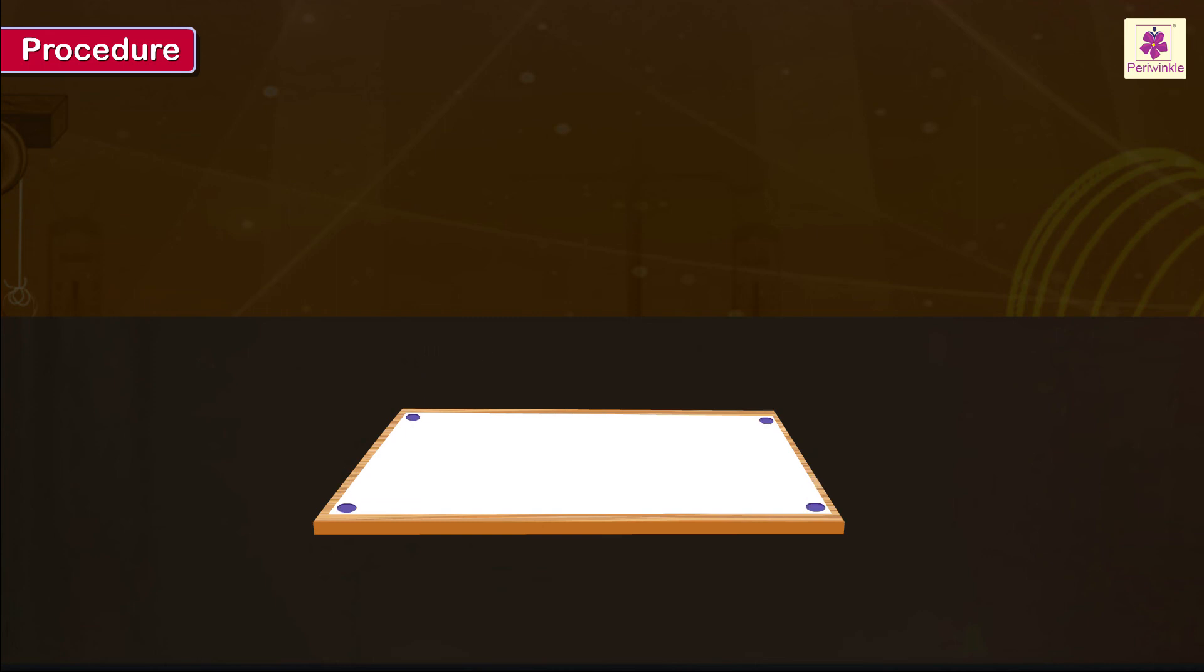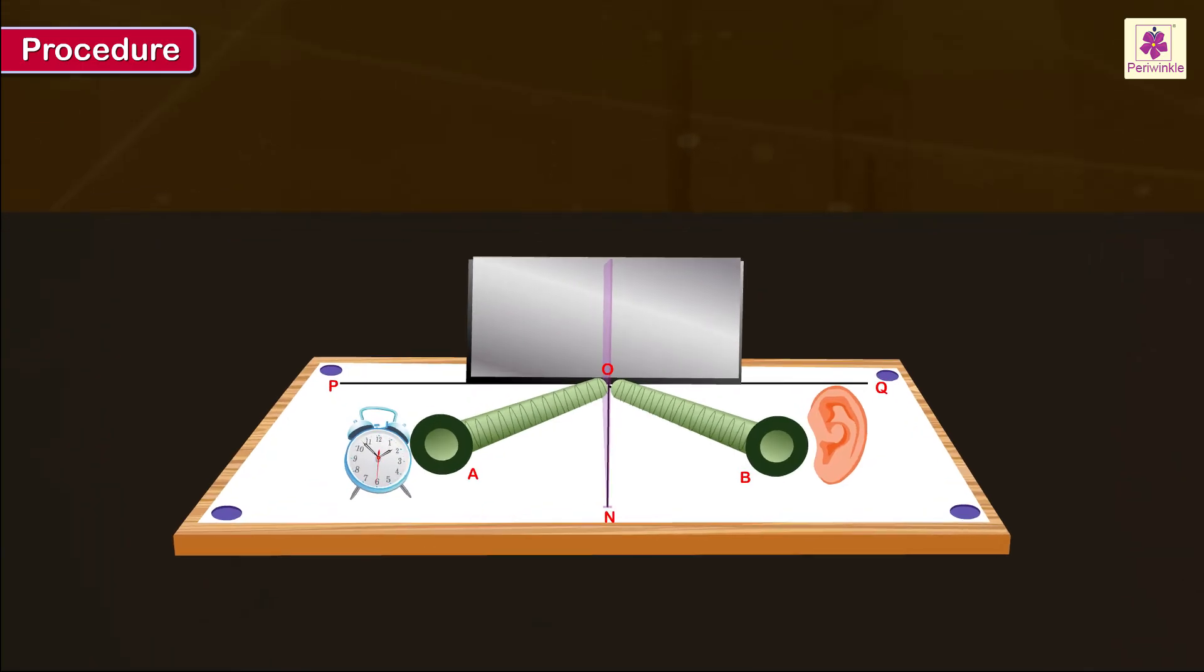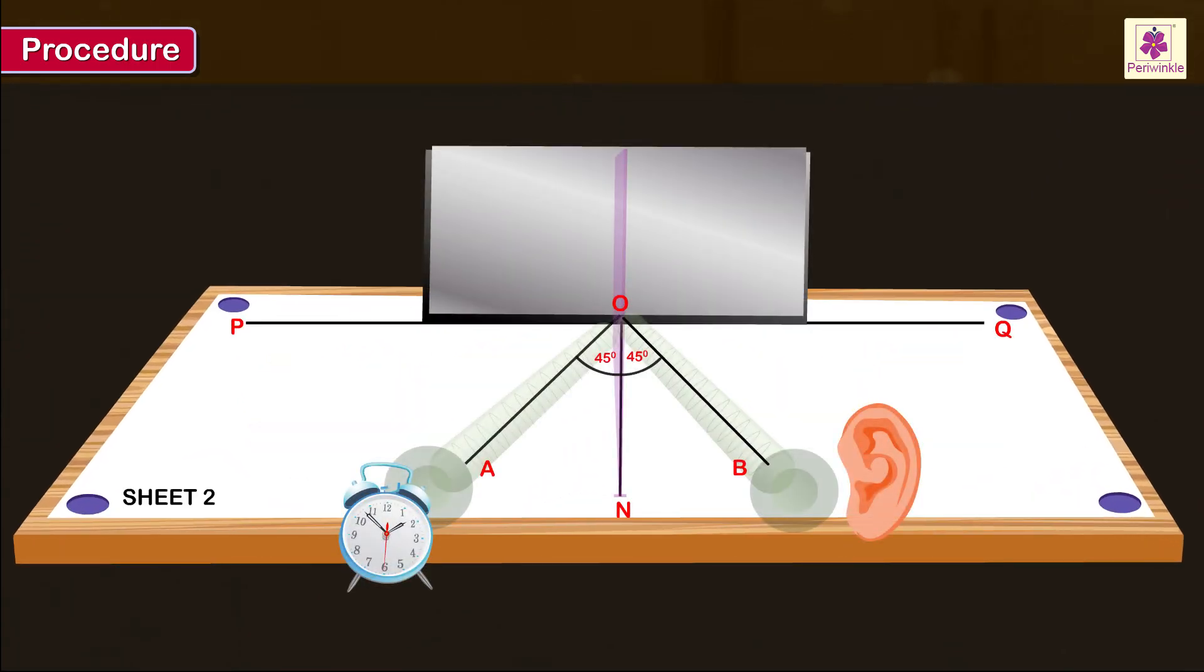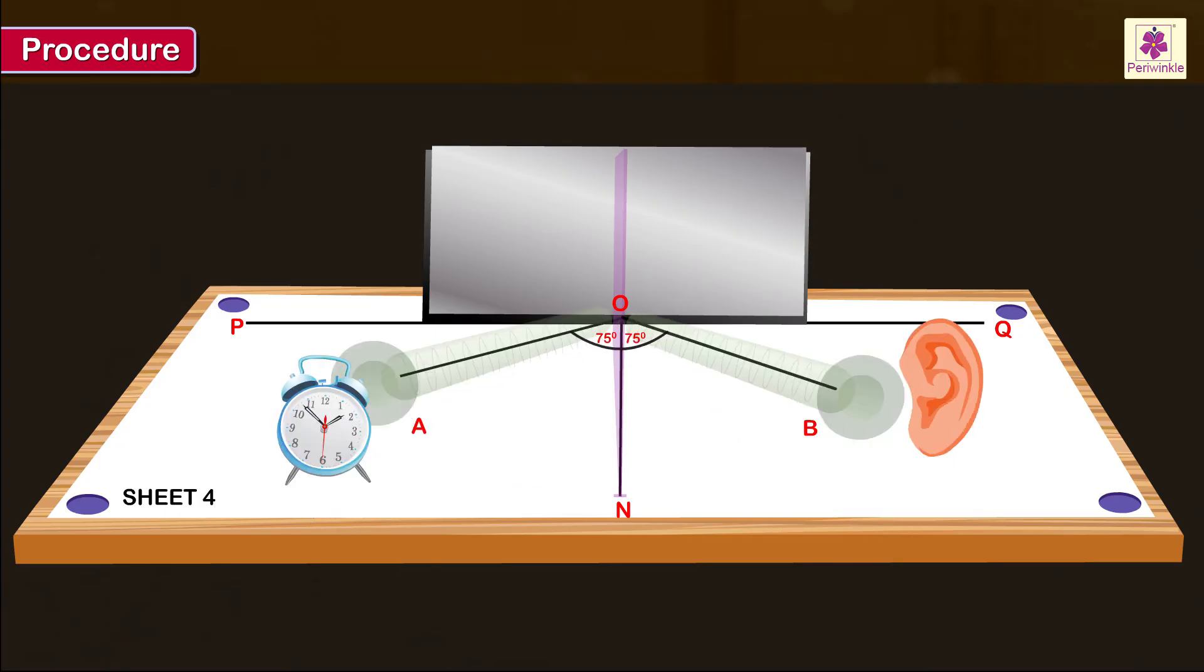Procedure: Place another blank drawing sheet on the drawing board. Repeat the earlier steps with different values of angle AON. Repeat this step three more times and obtain three more values of angle AON and angle BON.